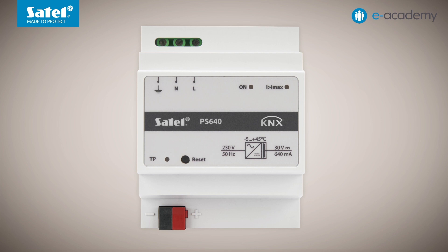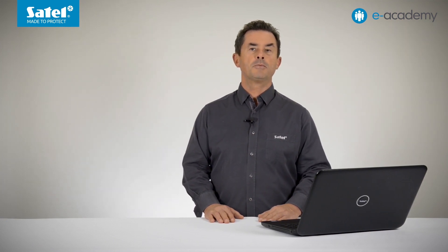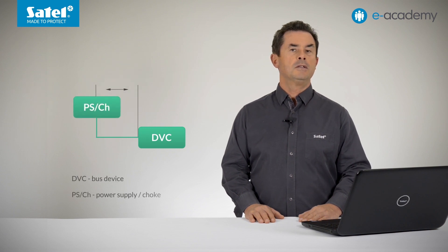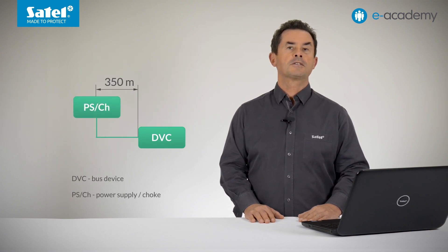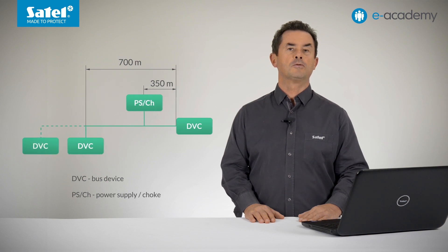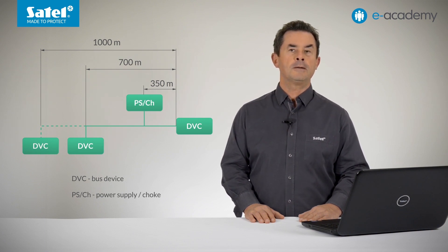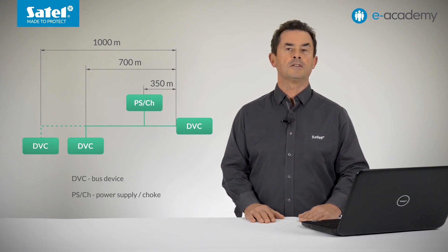When necessary, it is possible to connect more power supplies to the line, although this is subject to certain restrictions as well as manufacturer's recommendations. It is worth adding that, in order for the smooth operation of the system, the length of the cable between a single bus device and the power supply must not exceed 350 m. The cable length between two bus devices must not be longer than 700 m. As for the maximum length of a single line, this can be up to 1,000 m. The minimum distance between two power supply units working in one line should be 200 m, unless otherwise specified by the manufacturer.